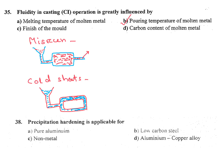In case of cold shot: after solidification, two portions of metal flow together but they are unable to fuse properly. This type of defect is called cold shot. Both misrun and cold shot are due to lack of fluidity or improper pouring temperature — low pouring temperature — for both defects.